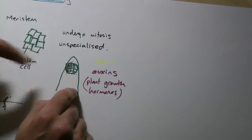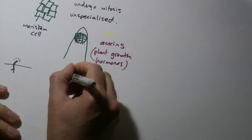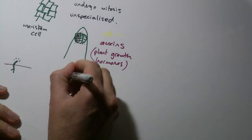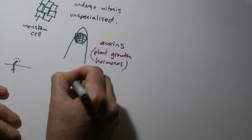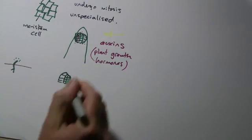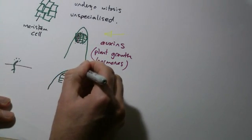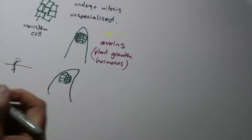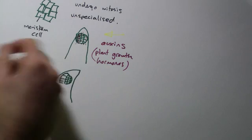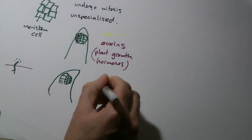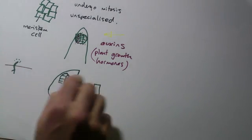So remember these auxins will make these cells grow so what happens is the cells on one side, let's see if I can draw this, will be growing so they get a lot bigger, they get longer, in fact they elongate more than the cells on the other side which stay quite small. So the effect is it's pushing the plant over, it's growing literally in the direction of the light because the cells on this side are dividing more or they're elongating, they get longer. So it's literally growing more on one side.